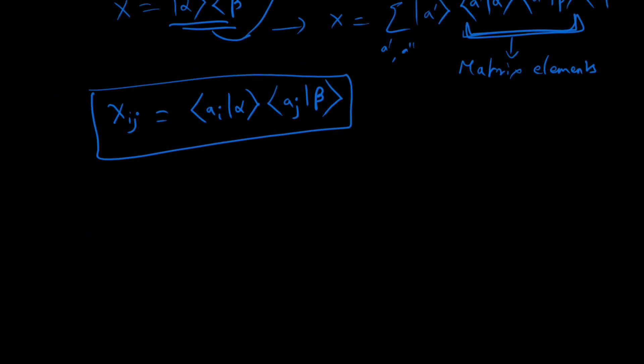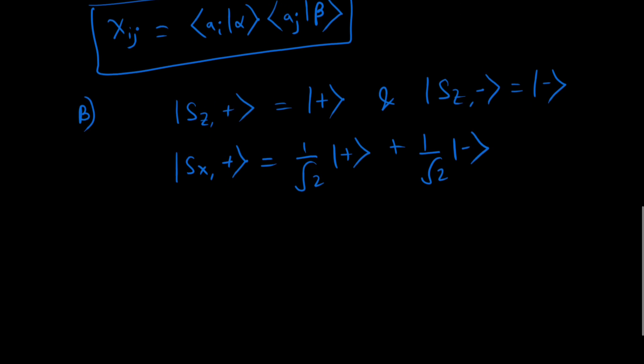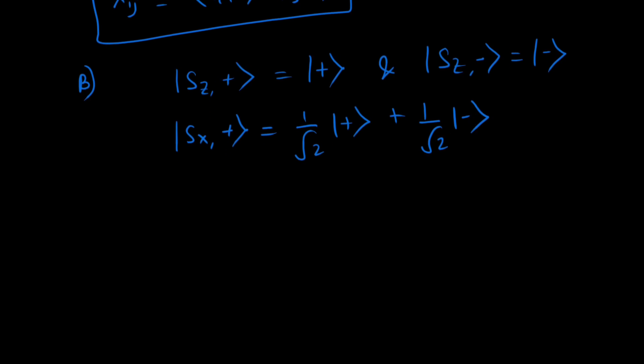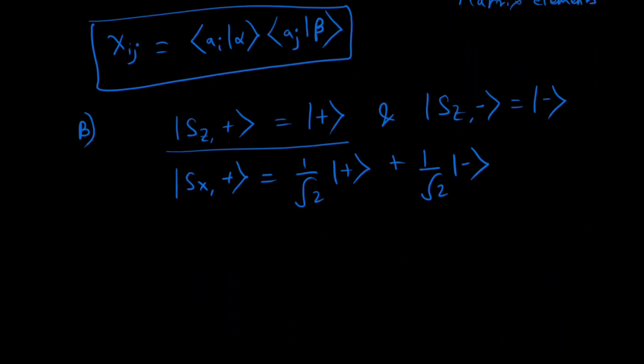In the z diagonal basis, we know it's composed of z plus which we'll write conventionally as plus, and s_z minus which we'll just write conventionally as minus. And the s_x plus can be written as 1 by root 2 plus, plus 1 by root 2 minus. So we have been given that this term right here is alpha, and this right here is beta.